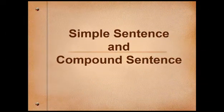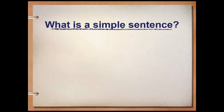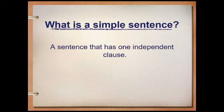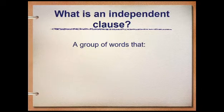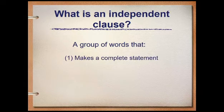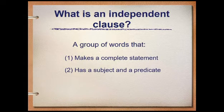For today's lesson I will be discussing about simple sentences and compound sentences. What is a simple sentence? It is a sentence that has one independent clause. An independent clause is a group of words that makes a complete statement. It expresses a complete thought because it has a subject and predicate, or complete predicate.